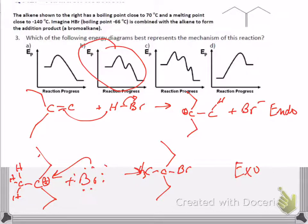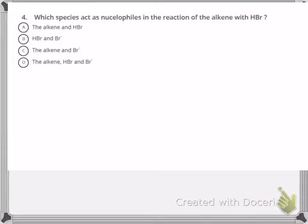The second step is going to be exothermic. And B is the only one that represents this two-step mechanism in this way. Although, in general, the first step is given as neutral, not quite endo or exo. The next question we just ask, what are the nucleophiles in this mechanism? So that would be the alkene and bromide. Step one is the alkene. Step two is bromide.